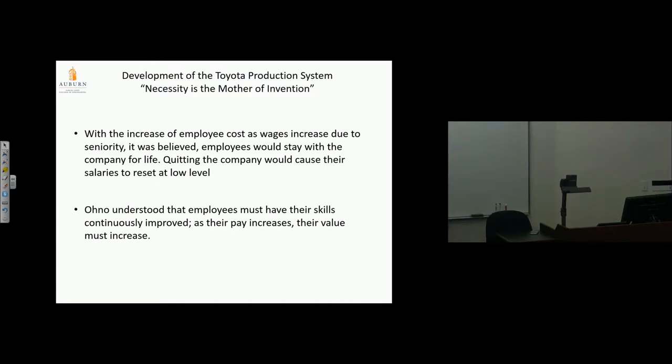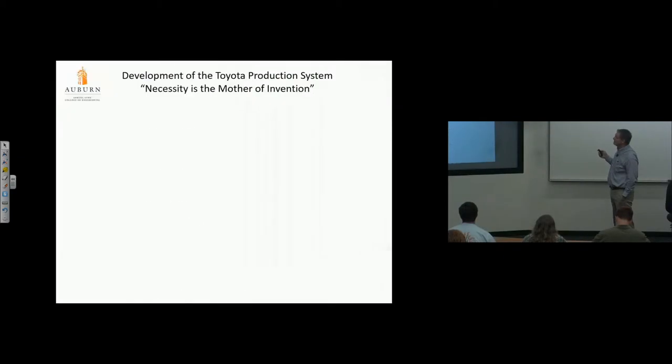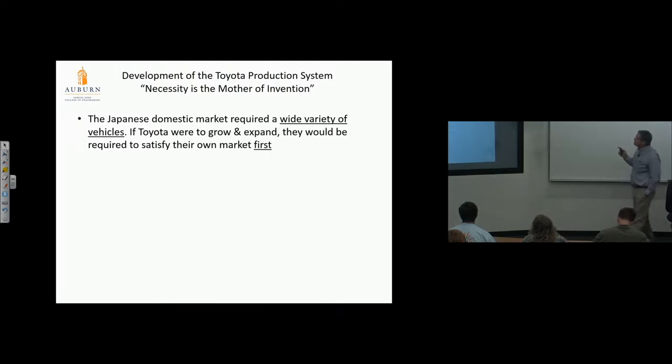Ono understood that as pay increases, employee value must increase. The Japanese domestic market required a wide variety of vehicles. If Toyota were to grow, they'd be required to satisfy their own market first. Imagine they're a new company trying to expand—they can't grow unless they satisfy their initial market, which requires variety. They can't build a Model T—they have to be flexible and competitive to grow.